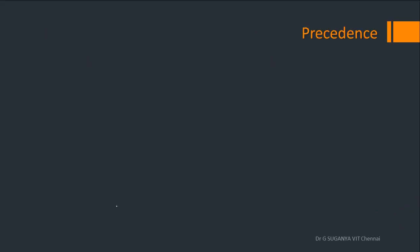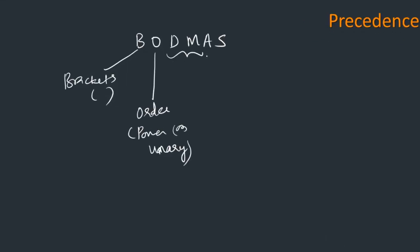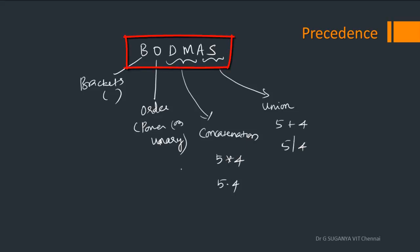It is important not only to understand the operations but also to evaluate them based on precedence. We all know the BODMAS rule. B is brackets — what we call parentheses. O is order — what we call powers, or unary operations. Then division and multiplication, which is equivalent to concatenation. Then addition and subtraction at the next level, which corresponds to union operation. Given any regular expression, this BODMAS rule needs to be applied to arrive at the final epsilon NFA.